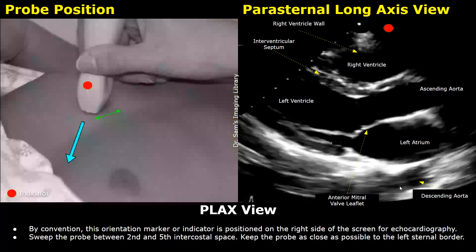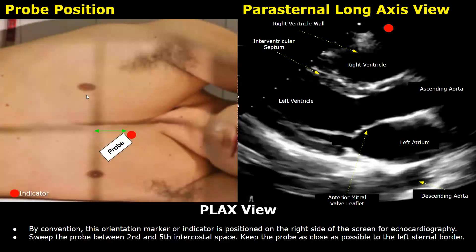Here is another image showing the probe position with the patient lying in supine position, with the indicator directed towards the patient's right shoulder. The left lateral decubitus position brings the heart closer to the ribs and moves the lungs away from the parasternal window. So if you are having trouble finding a good image with the patient in supine position, switching to a left lateral decubitus position can be helpful.